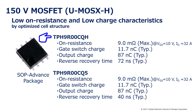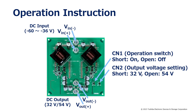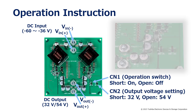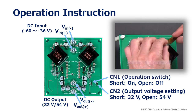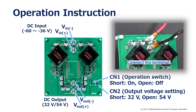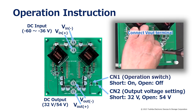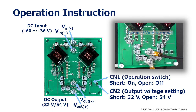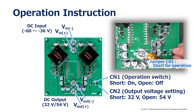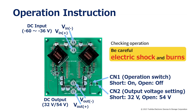TPH9R00CQH is ideal for the low side, which does not require high-speed reverse recovery operation. This section explains instructions for using this reference design. Use jumper CN2 on the board to set the output voltage. Connect a stabilized DC power supply to the V-in terminal and a load to the V-out terminal. If a voltage between minus 60 and minus 36 volts is input and jumper CN1 is shorted, the set voltage is output from the V-out terminal. Be careful not to get an electric shock or burn when checking the operation.